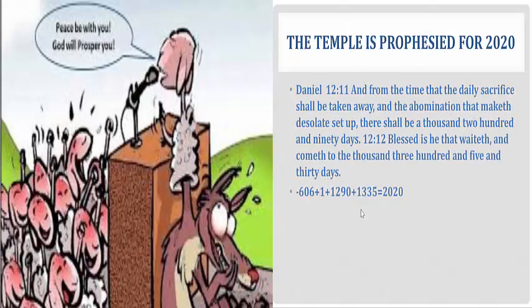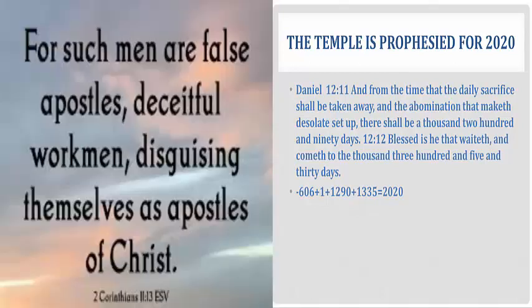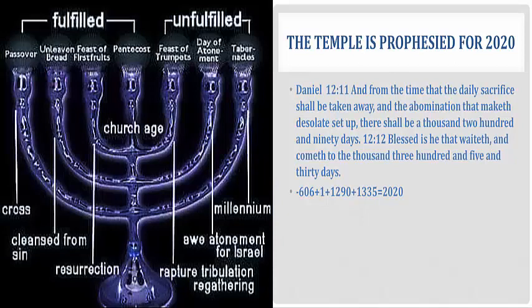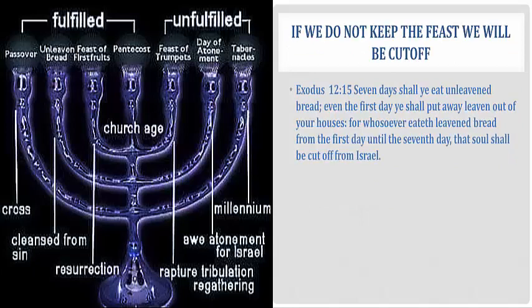Another reason why this is so important, especially today in 2020, is because that temple is prophesied to be built on the hearts and minds of humanity in the year 2020. Believe it or not, if you look in the book of Daniel chapter 12 verses 11 and 12, it was pointing to the year 2020. Knowing that the daily sacrifice was taken away in 606 BC, and you add up the years — 1,290 plus the 1,335, and don't forget about the 1 year because there was no year 0 — you end up with 2020. And so this is another reason why it's so important to keep the Feast of Passover, because we could actually be ready for this third temple, this temple that's going to be built in the hearts of humanity.